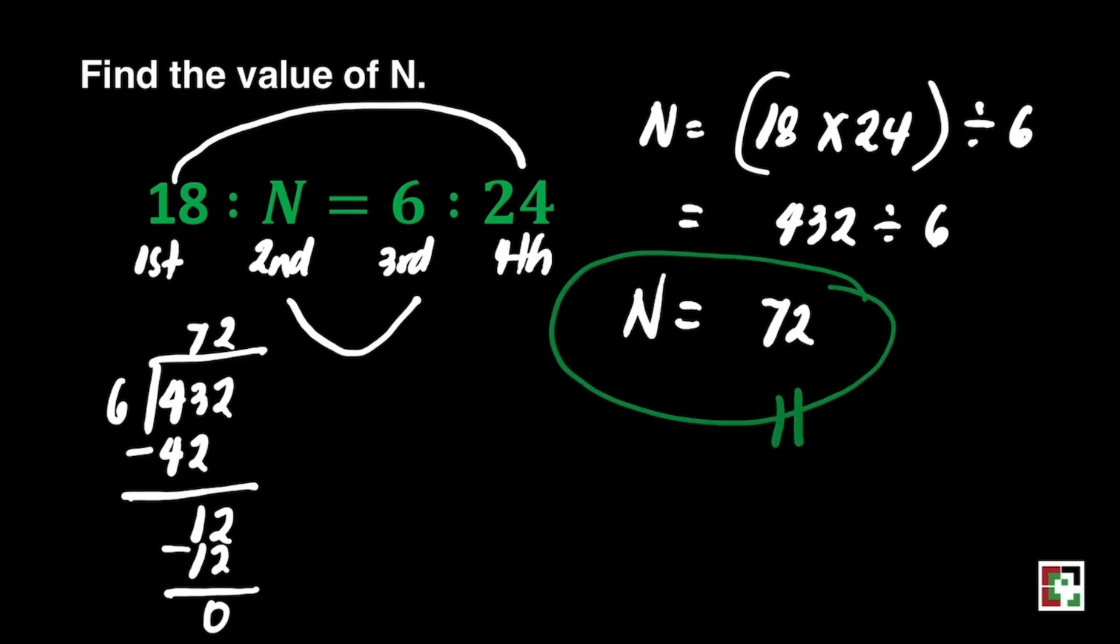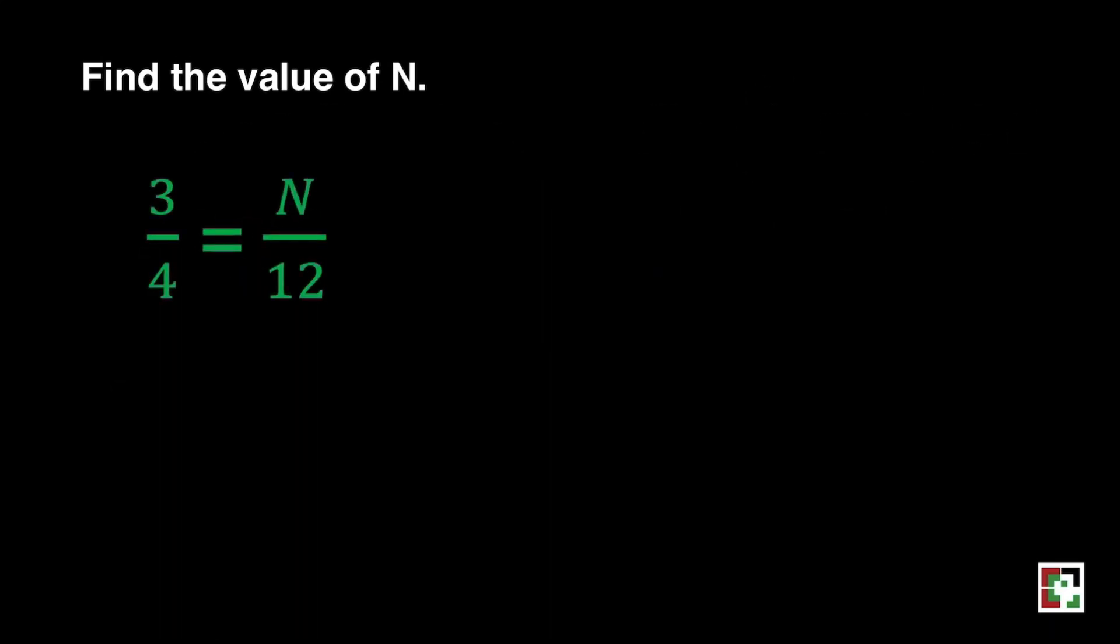Let's have another one. Ratios can also be written in fraction form, just like what we have here. 3 over 4 is equal to n over 12.